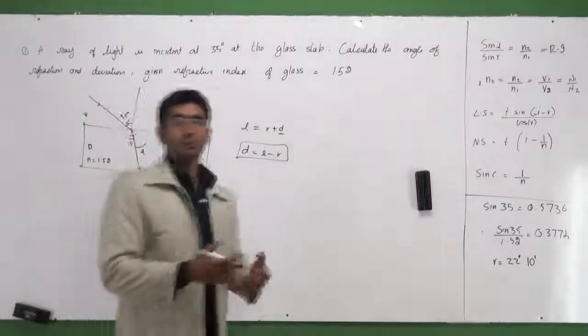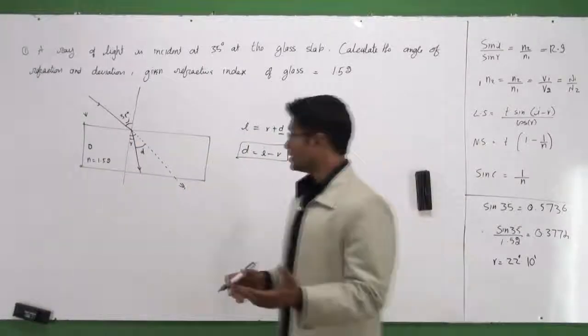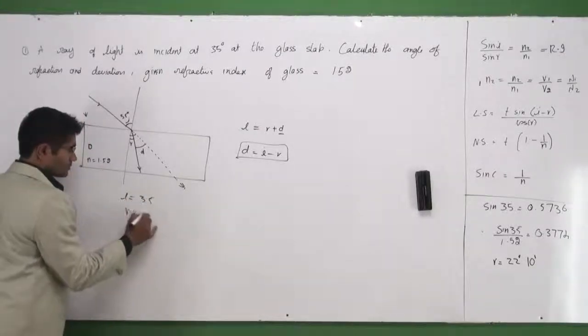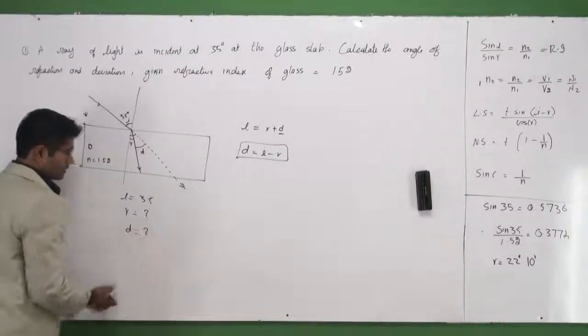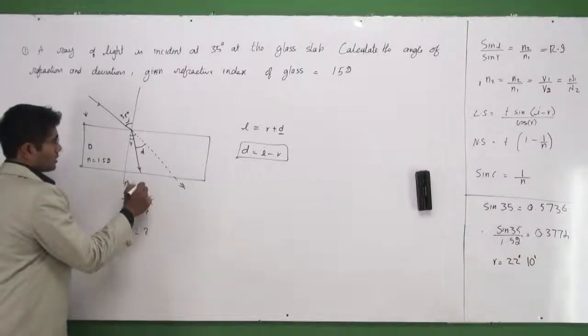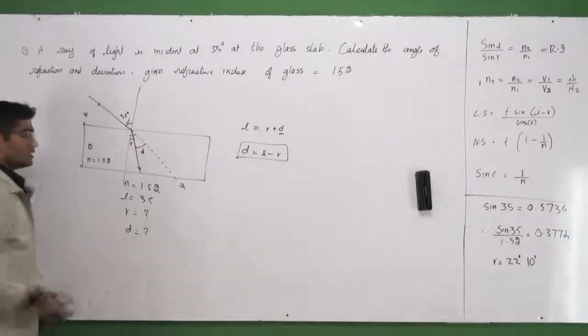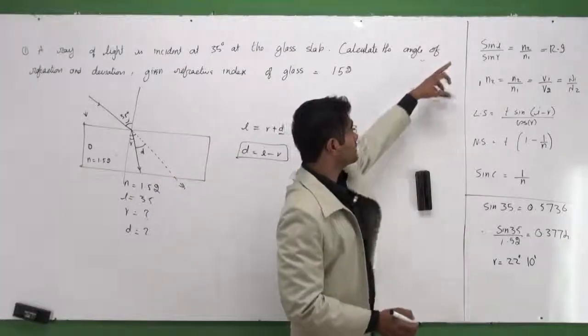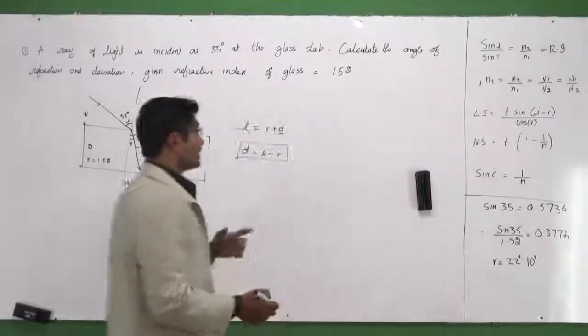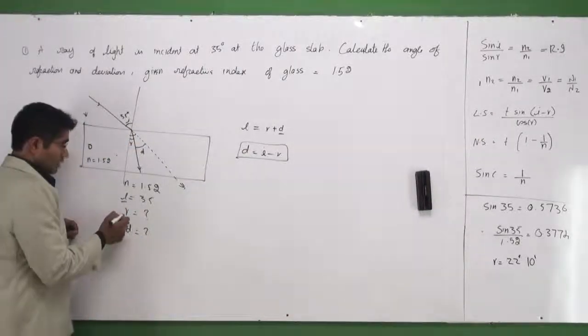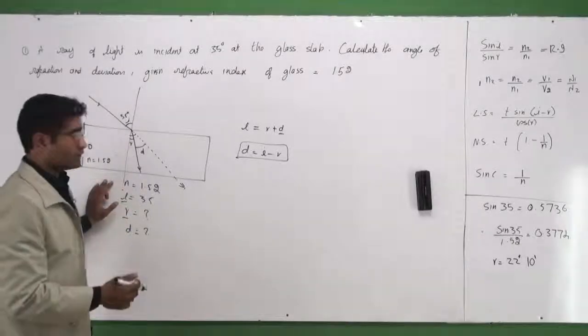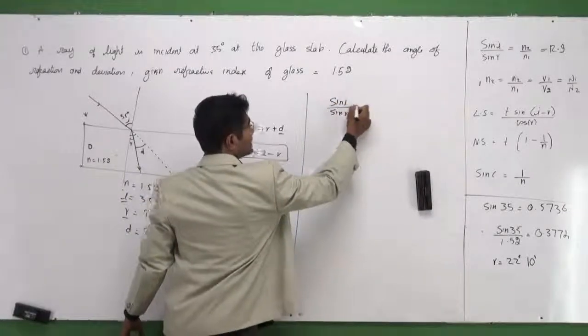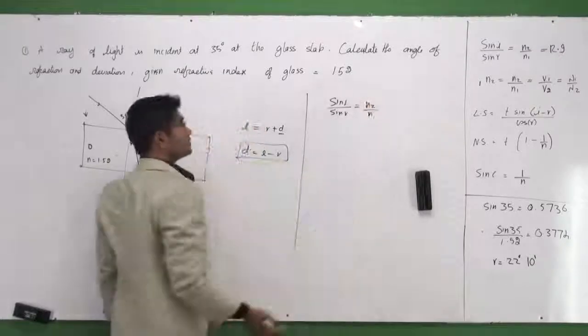What do I know connected to this particular problem? What's given to me? I know that i is given as 35. r is what I'm supposed to find out, and d is what I'm supposed to find out. I also have the value of refractive index of the glass. So I go back to the formulas of this particular chapter. I can see that sin i by sin r is given as n2 by n1—the first formula there. Can I use this formula here? I have i, r, and n. These are the three things I can see in that formula.